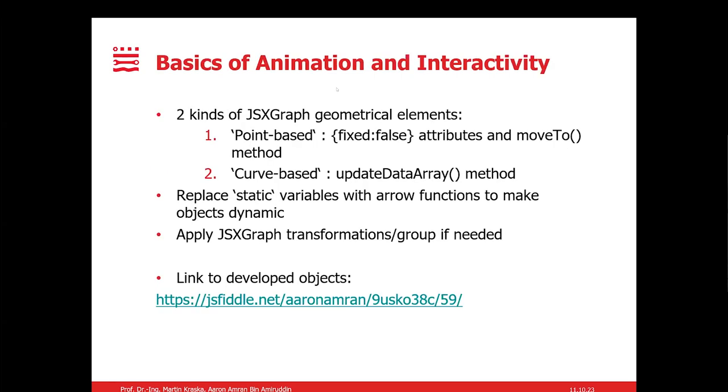Now I would like to explain from my experience of programming, of trying to develop MecLib and my experience of using JSXGraph. From my experience, I came to realize that there are two kinds of geometrical elements. This is not specifically stated in JSXGraph, but I came to realize that firstly, there are the point-based objects where we can simply directly apply the fixed equals false attributes and the moveTo method to the points, to simply move the point from one point to another. However, the problem arises for the curve-based object where the moveTo method just doesn't apply directly.